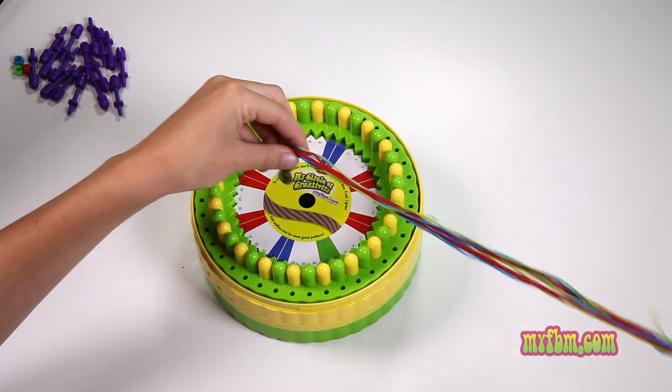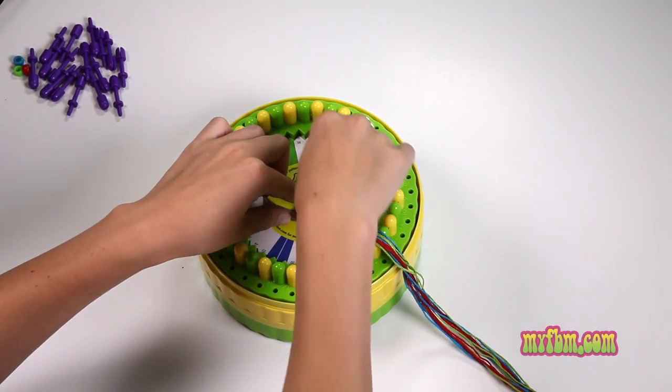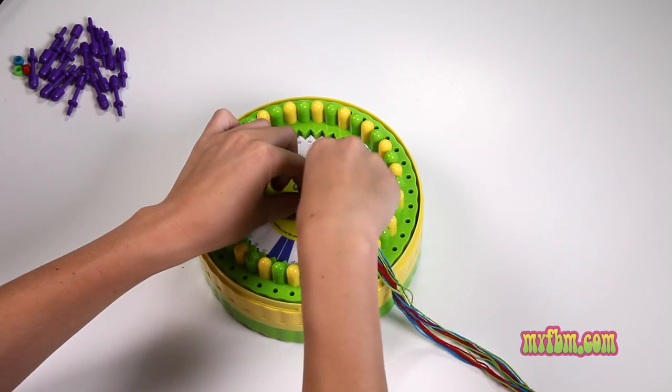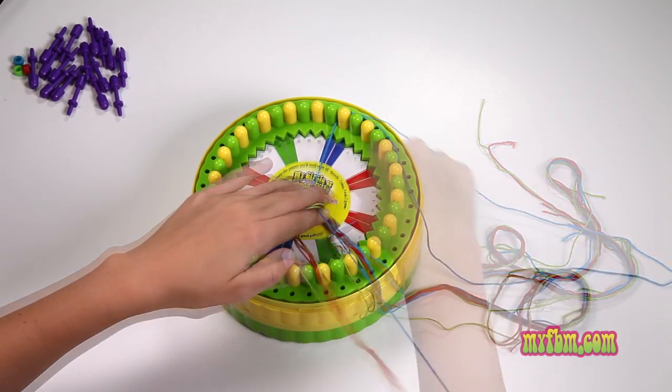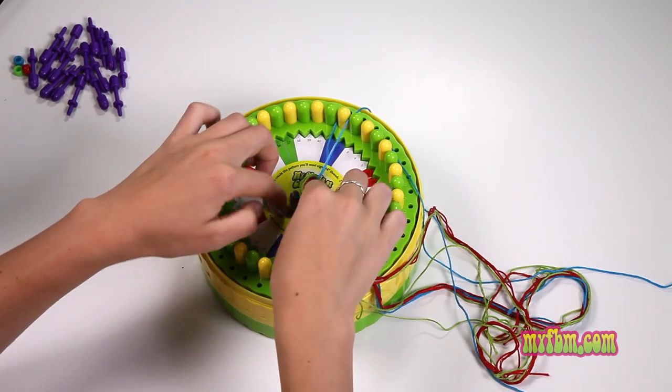Drop the knot into the center of the circle of creativity. Next, line up each string with the corresponding colors. At the top I have two blue. It's okay if the knot from the center pops out. Just push it back in.